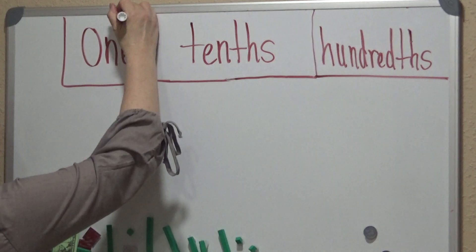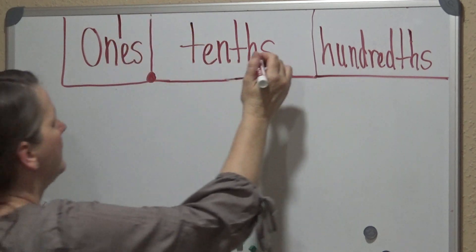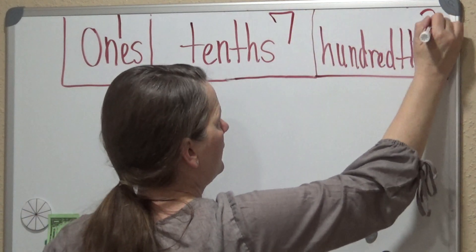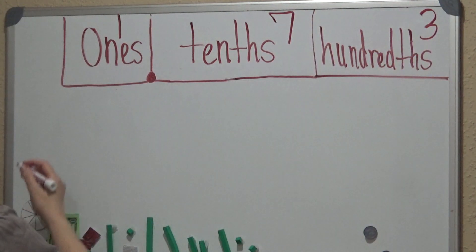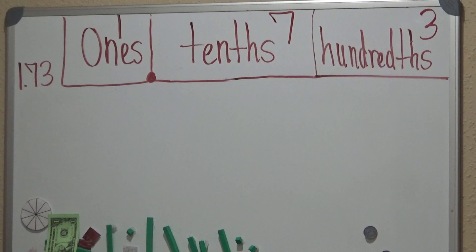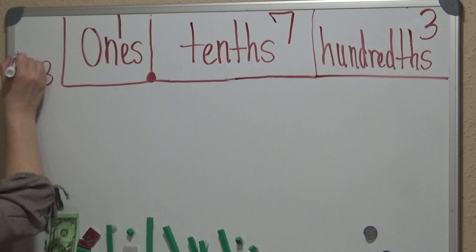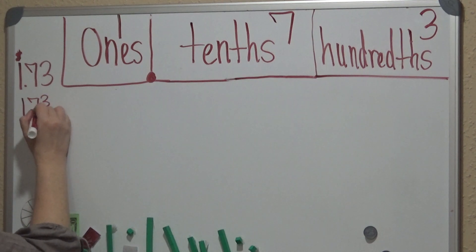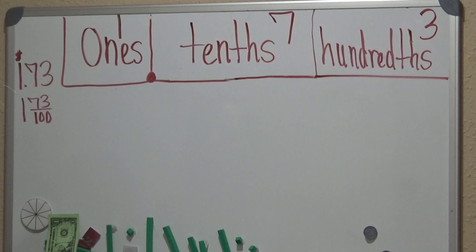So we'll start off with $1.73. This would also be the fraction one whole and 73 out of 100. Let's go ahead and begin.